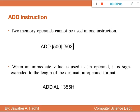Two memory operands cannot be used in one instruction. For example, adding the contents of [502] with the contents of [500] is not allowed in assembly programming — you cannot use two memory locations in one instruction.